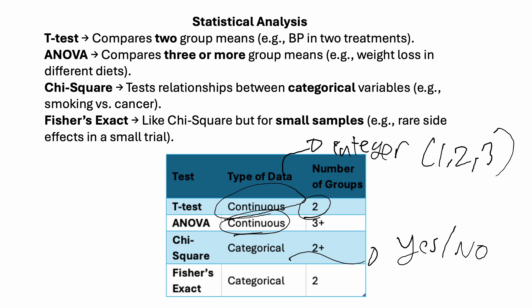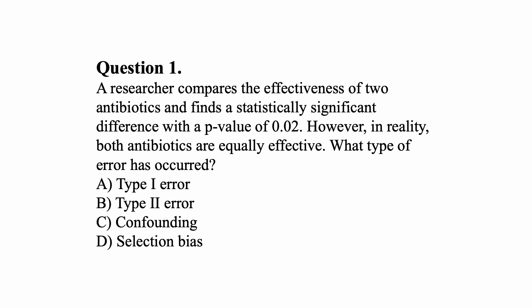Let's do some practice questions. Question one: A researcher compares the effectiveness of two antibiotics and finds a statistically significant difference with a p-value of 0.02. However, in reality, both antibiotics are equally effective. The study found a statistically significant difference, although in reality there is no difference. So this is an example of type 1 error — you're calling a false positive, incorrectly rejecting the null hypothesis. Remember the boy who cried wolf.